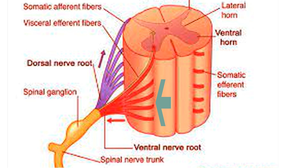Motor neurons found in the cortex of the brain are called upper motor neurons, and the motor neurons found in the brain stem and spinal cord are called lower motor neurons. Neurons from the cortex — upper motor neurons — send a signal to the lower motor neurons found in the spinal cord. The fibers of lower motor neurons will make the ventral root, or motor root, of the spinal cord. So till here we have covered the ventral root.